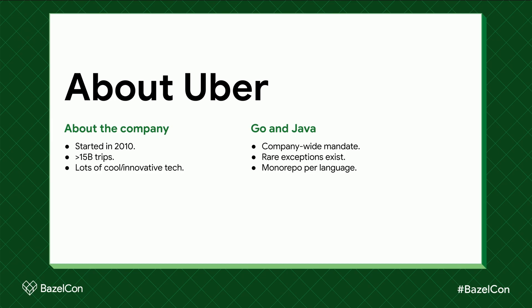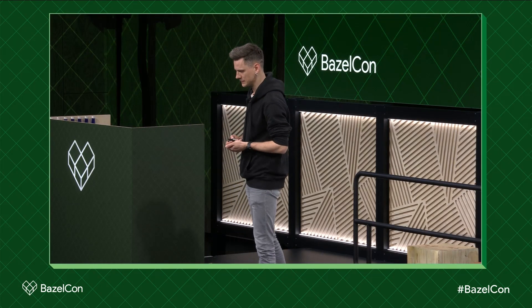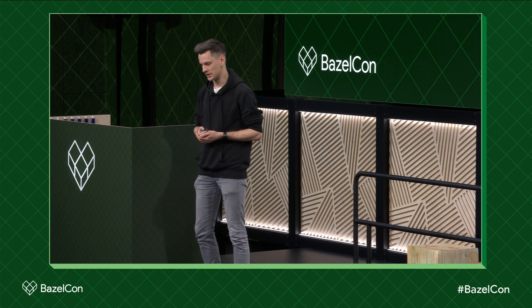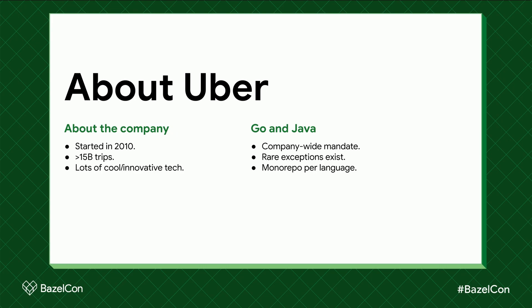A couple of words about the company: Uber was started in 2010 and since then over 15 billion trips have been made on the platform. We branched out to other areas such as food delivery and freight, and built a lot of cool and innovative technology. Primarily we use Go and Java — either a company-wide strategy or mandates depending on how you see the world. Infrastructure is built on top of Golang; C++ is used in some cases but those are exceptions. We have a mono repo per language and the Golang one is the biggest, and that's where we're introducing the hermetic toolchain.